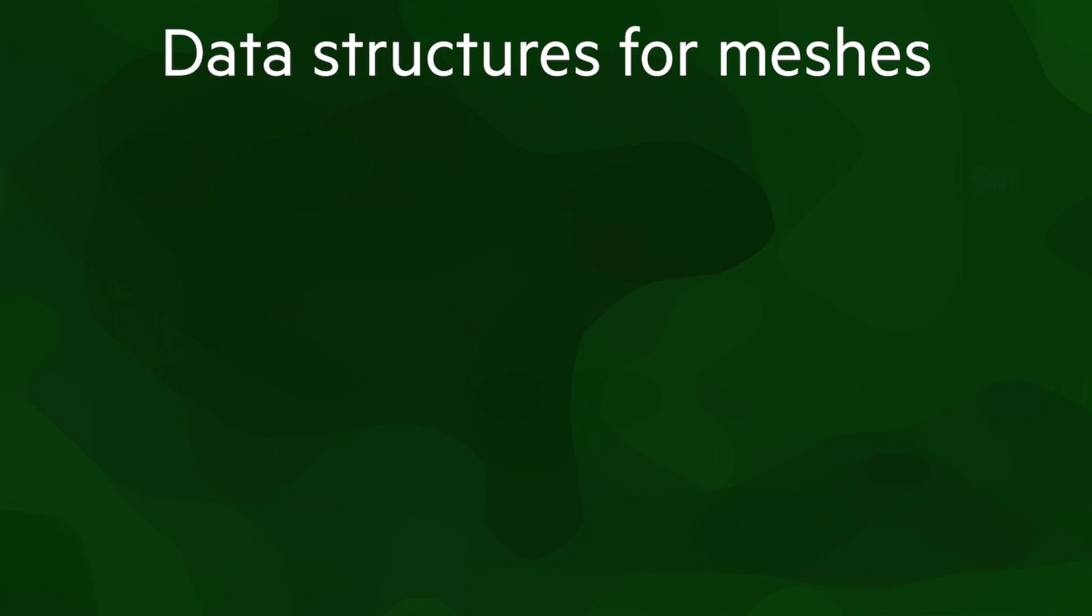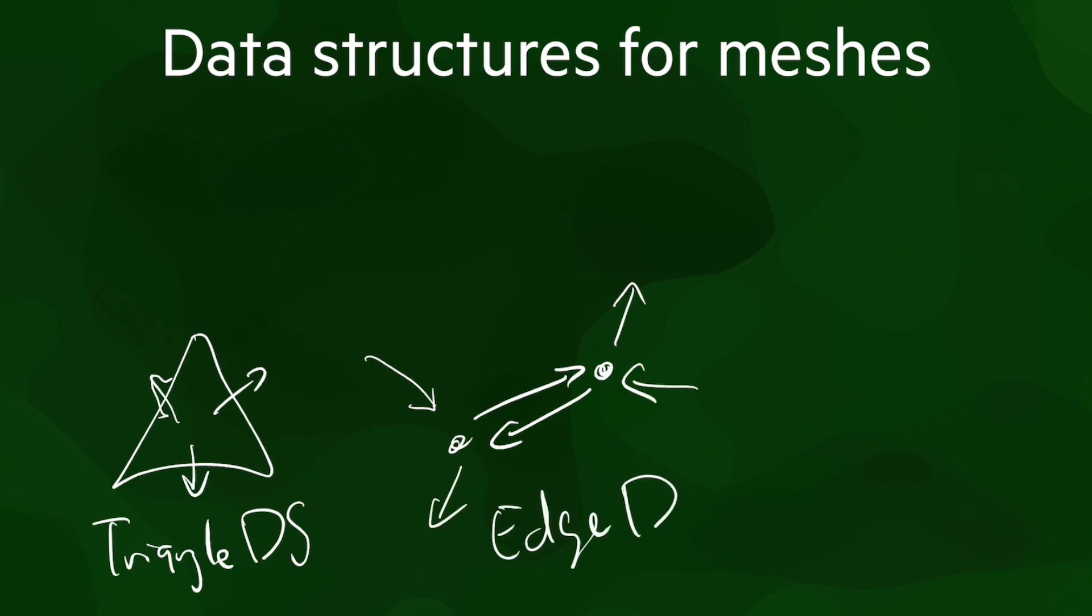There are three kinds of data structures that are typically used to store meshes. Triangle-based data structures, which mainly store triangles with links to their neighbors. Edge-based data structures, which mainly store either half edges or full edges, that are linked to the next ones around the polygon. And incidence graphs, which store everything: polygons, edges and vertices.